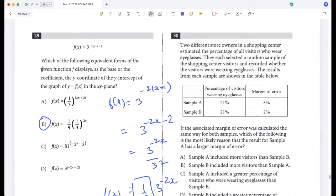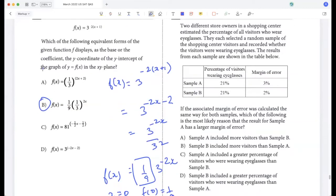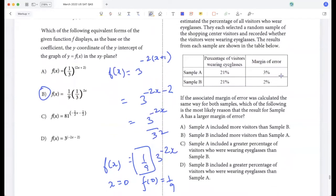Two different store owners in a shopping center estimated the percentage of all visitors who wear eyeglasses. They selected a random sample of the shopping center visitors and recorded whether the visitors were wearing eyeglasses. The results are shown here. If the associated margin of error was calculated the same way for both samples, which of the following is the most likely reason that the result for sample A has a larger margin of error? Larger margin of error, if both the samples were similar, could be because sample A was smaller, because when you have a smaller sample the margin of error is higher. So sample B included more visitors than sample A.